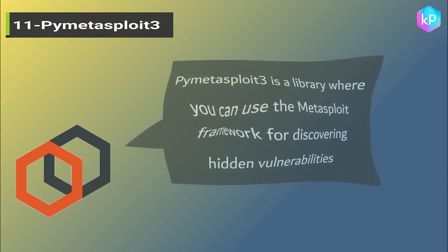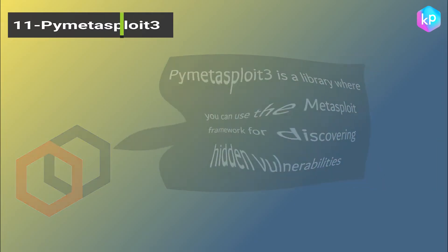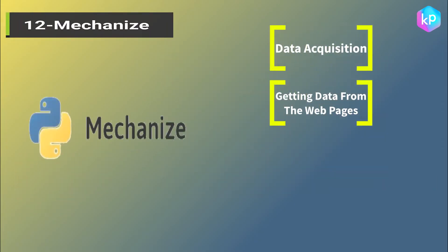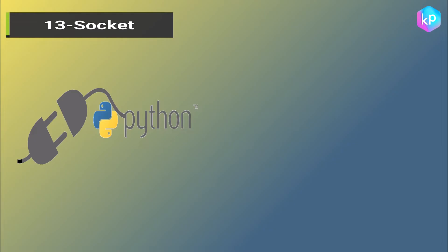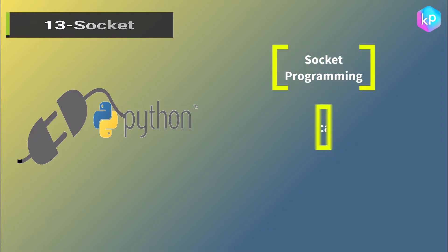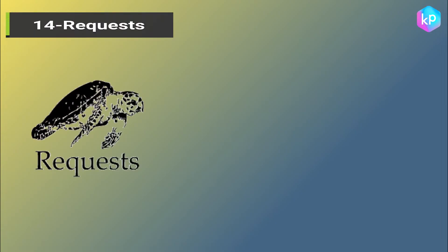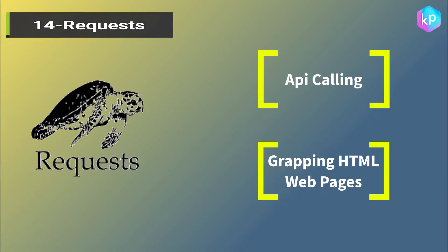PyMetasploit3 is a library where you can use the Metasploit framework for discovering hidden vulnerabilities. Mechanize is used for data acquisition, getting data from webpages, checking SQL injection, and cross-site scripting. Socket Library is widely used for socket programming, port scanning, and network sniffing. Requests Library is used for API calling and grabbing HTML webpages.